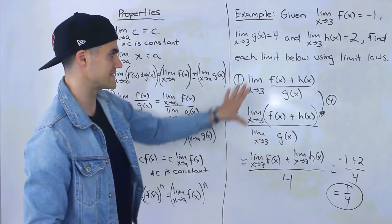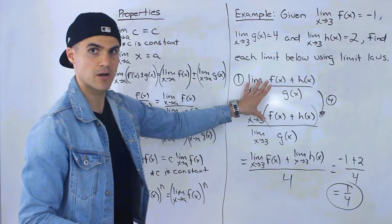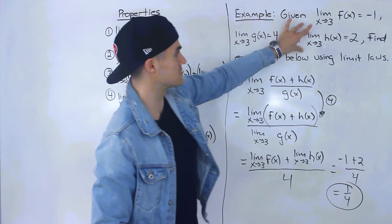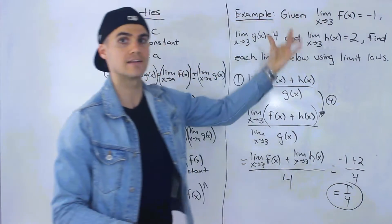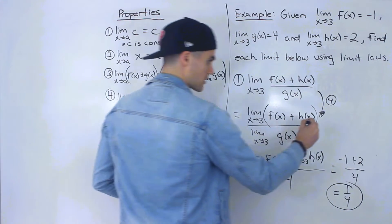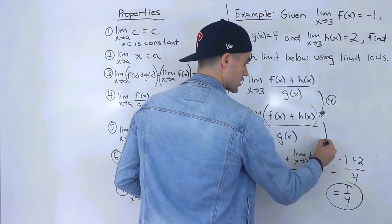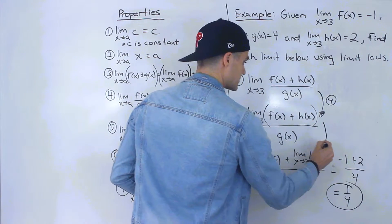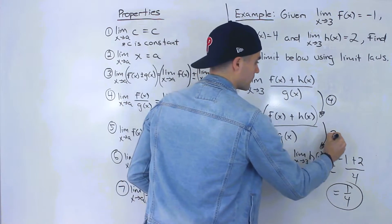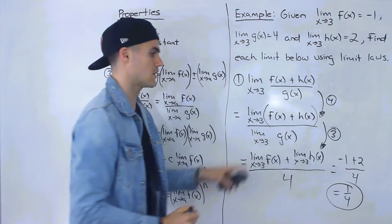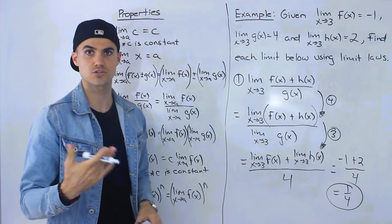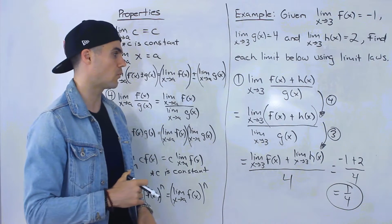So again, you have to take these expressions and get them in terms of the given expressions. To do that you use these laws. From the sum step to the substitution step, the law I used was number 3, applied to the numerator. So 1 over 4 is the answer to number 1.